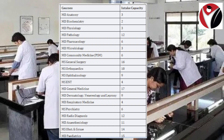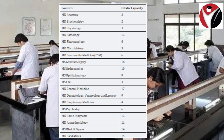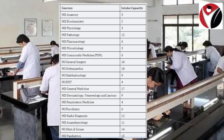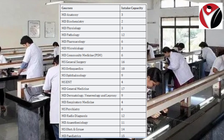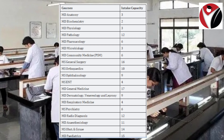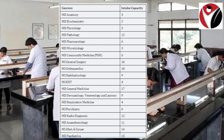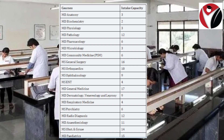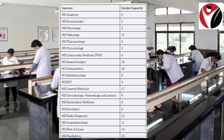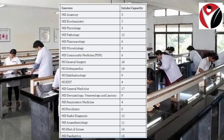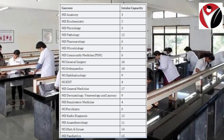Pharmacology has 6 seats, Microbiology has 3 seats, Community Medicine has 6 seats, General Surgery has 16 seats, Orthopedics has 10 seats, Ophthalmology has 9 seats, ENT has 4 seats, General Medicine has 17 seats, Dermatology Venereology and Leprosy has 9 seats, Respiratory Medicine has 4 seats, Psychiatry has 6 seats, Radio Diagnosis has 12 seats, Anesthesiology has 11 seats, Obstetrics and Gynecology has 14 seats, Pediatrics has 15 seats, and Emergency Medicine has 2 seats.